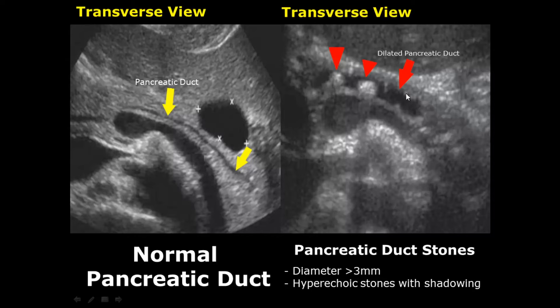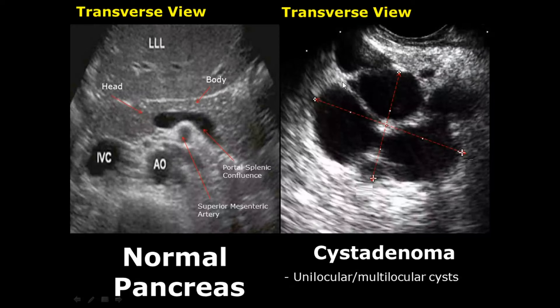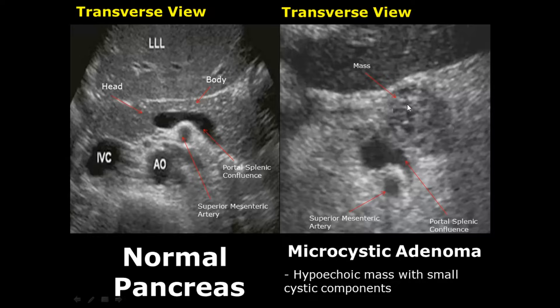A cyst adenoma of the pancreas may have a unilocular or a multilocular appearance. These compartments inside the cyst are called locules — they can be either one or more than one. A microcystic adenoma, as the name suggests, has small cystic components inside a hypoechoic mass, as you can notice here.